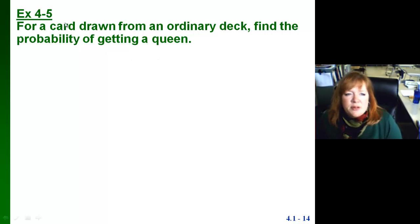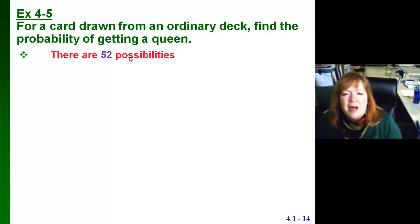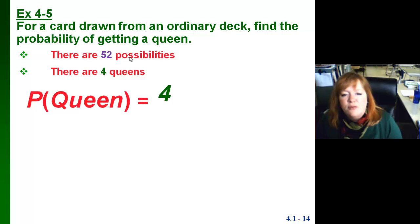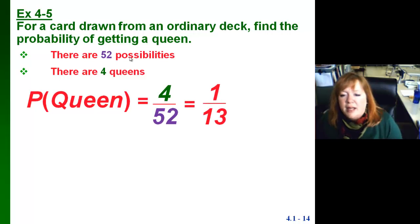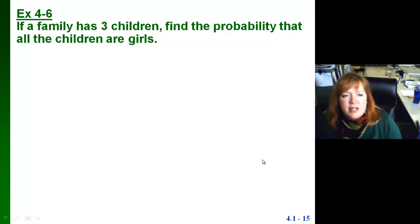Let's do an example. For a card drawn from an ordinary deck, find the probability of getting a queen. You need to know how many queens there are and the total cards in the deck. There are 52 possible cards and 4 queens, so the probability is 4 out of 52. In lowest terms, that's 1 out of 13. Your book leaves a lot of answers as fractions.